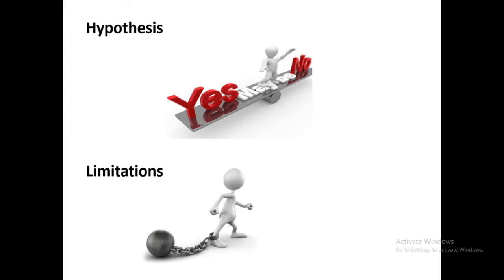Limitations: you have to state your limitations. For example, the time frame — this is my limitation, I can work on this topic for only six months, one year, or two years. Or if you have chosen a limited sample size — for example, 2,000 people — you must describe why you are not choosing more or fewer than 2,000 people. You also must explain, for example, why you chose only male subjects and not female.